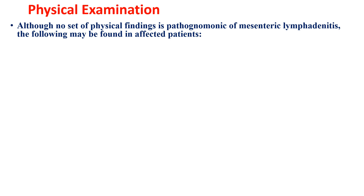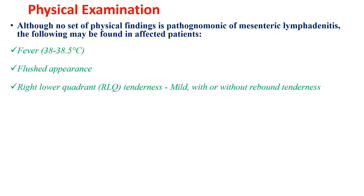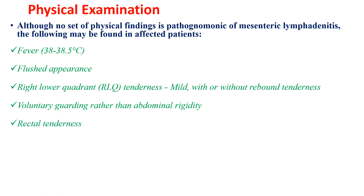No set of physical findings is pathognomonic of mesenteric lymphadenitis. The following may be found in affected patients: fever, flushed appearance, right lower quadrant tenderness which is mild, with or without rebound tenderness — unlike that of appendicitis — voluntary guarding rather than abdominal rigidity, and rectal tenderness. Hematuria may also be present.